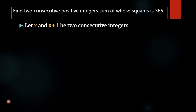So we can take: let x and x plus 1 be two consecutive positive integers. The difference between these two numbers is 1.